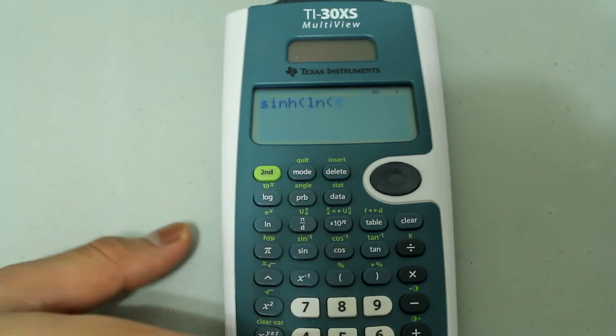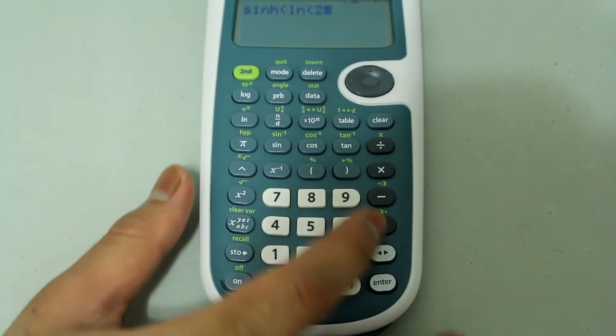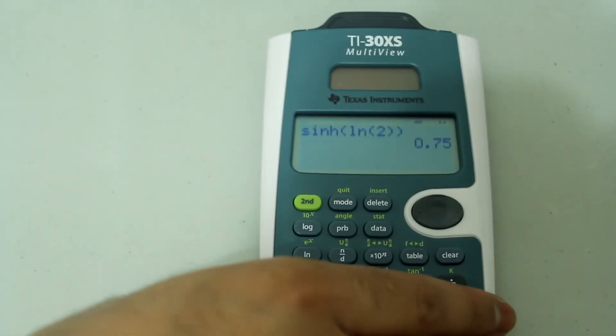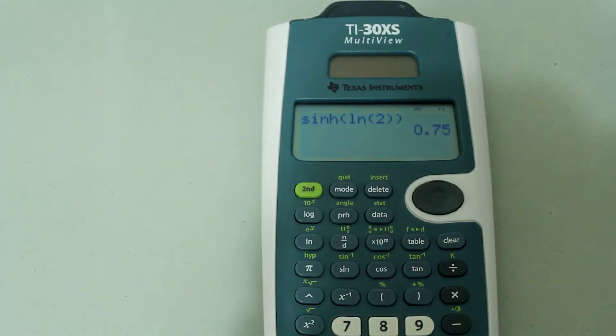So natural log 2, and then close off the parentheses and press ENTER. I get the sinh of natural log of 2 as 0.75.